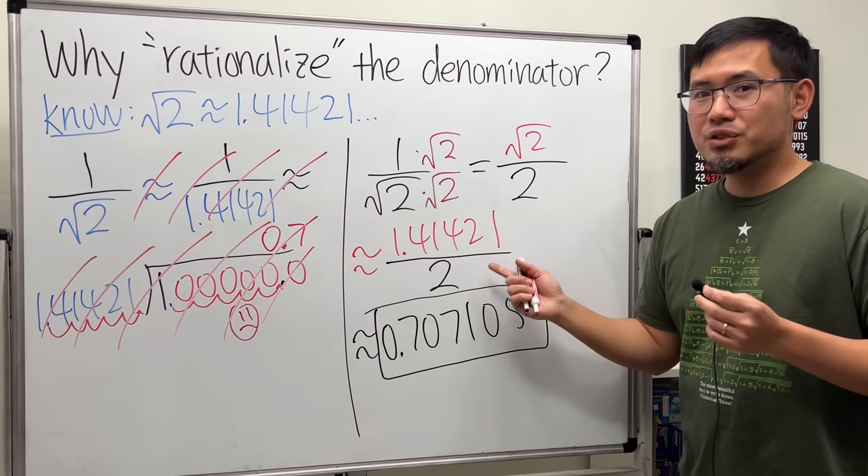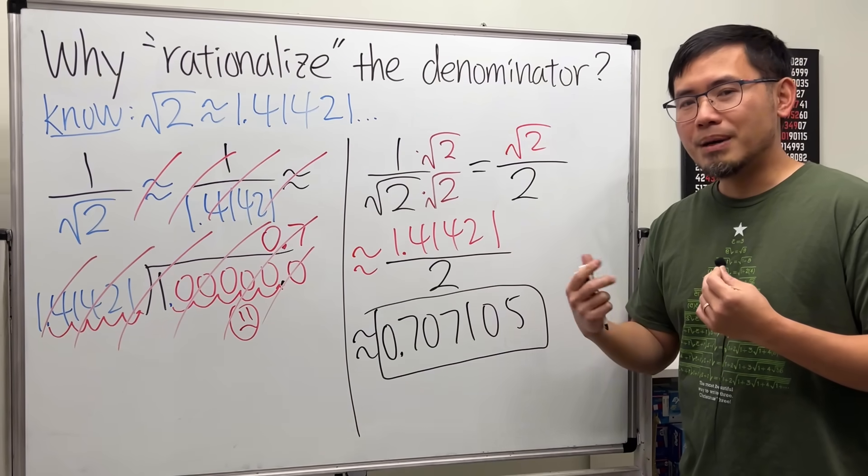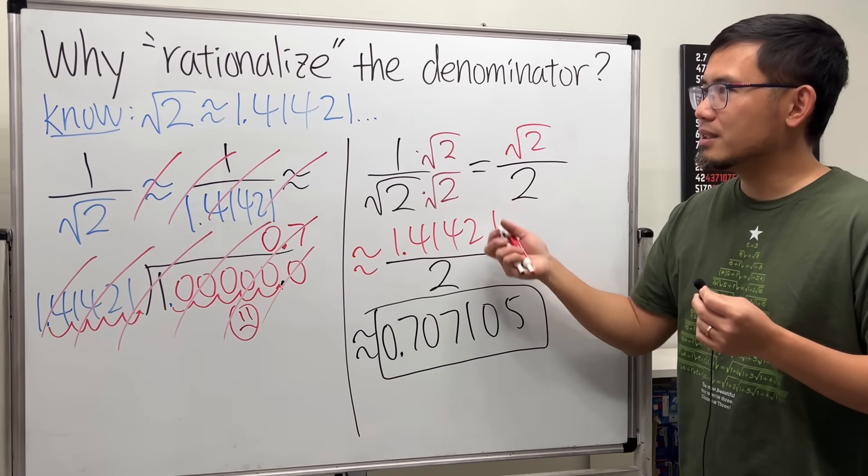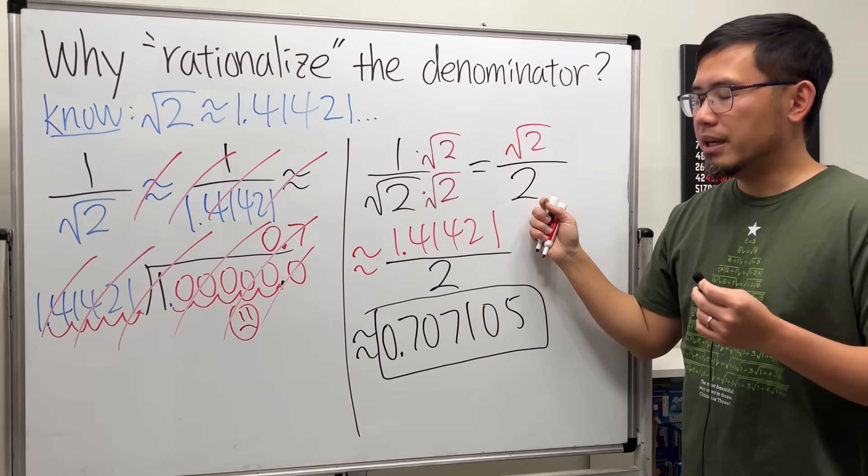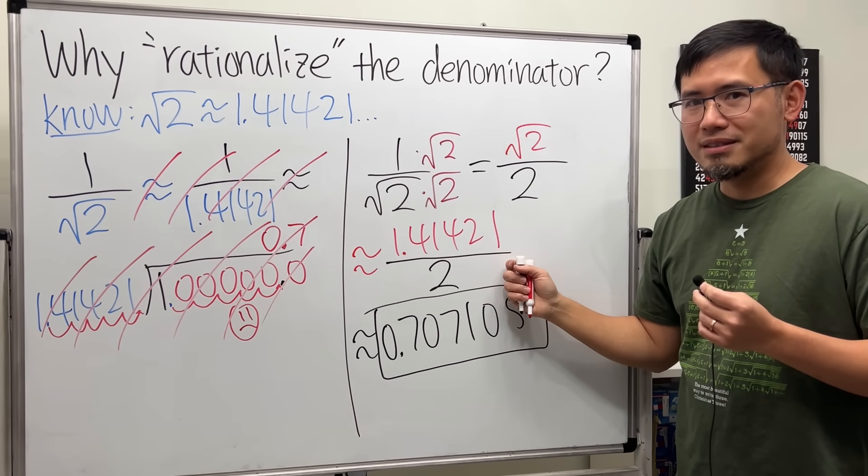So there you have it. If you use this approach, the division is so much easier. It's about doing the algebra first—that is, rationalizing the denominator—to make the next step easier.